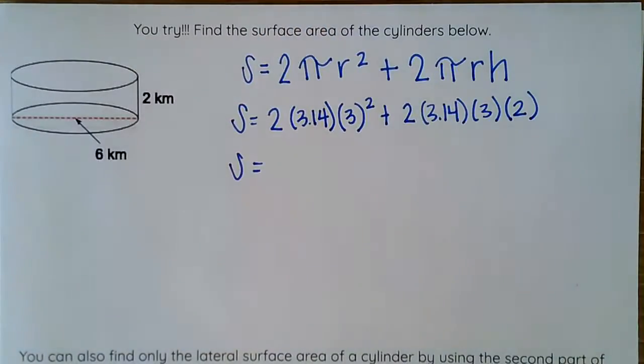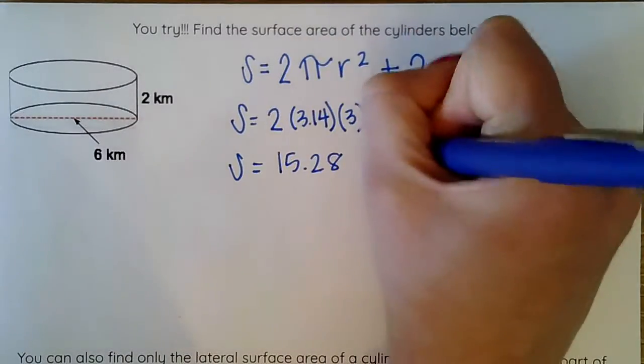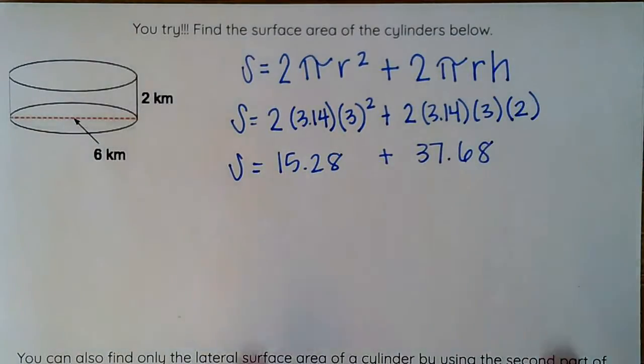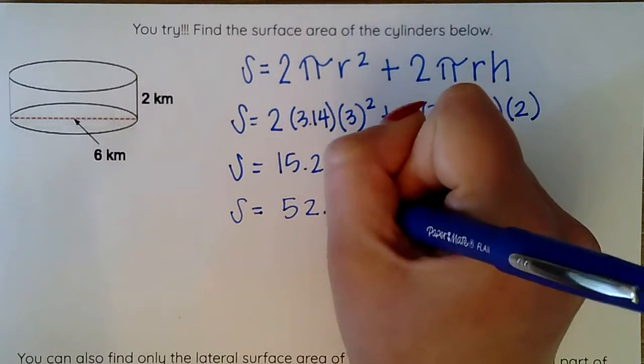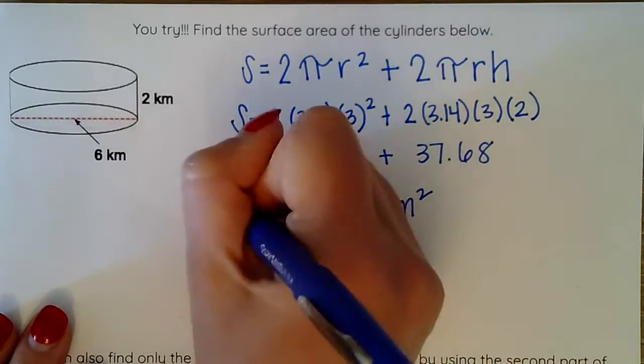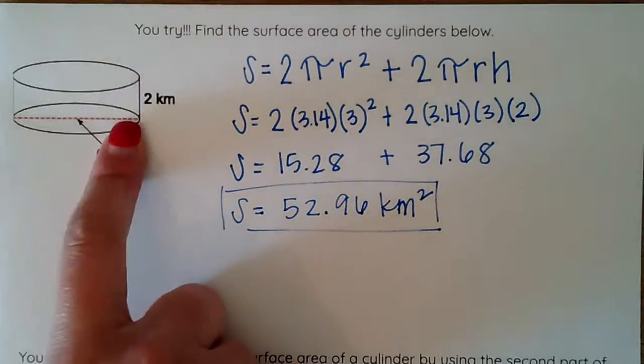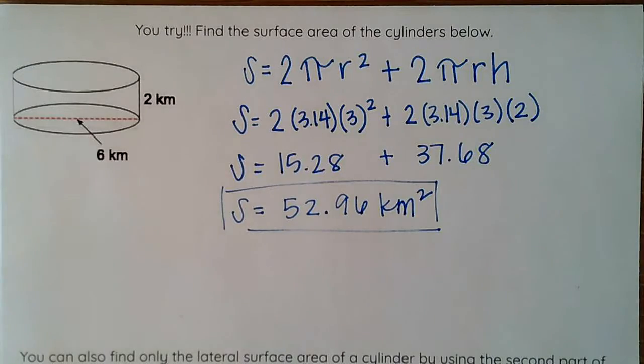Again, I can grab my calculator, plug all of this in to get me 56.52 added to 37.68. When I combine those, I add these two numbers together, I will then get my total surface area, which is 52.96 kilometers squared. There we have it. So just note that when we have our diameter, we cannot just plug in our numbers. We need to make sure that the dimensions that were given are the dimensions that match here, and if they're not, we have to manipulate them. In this case, dividing our 6 by 2 to get our radius of 3.